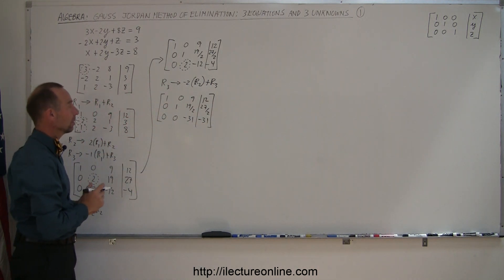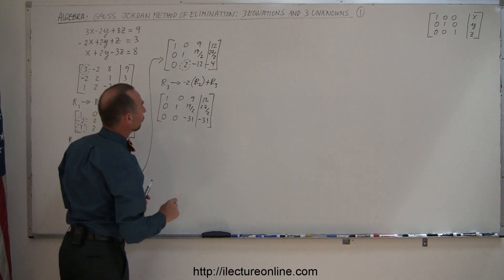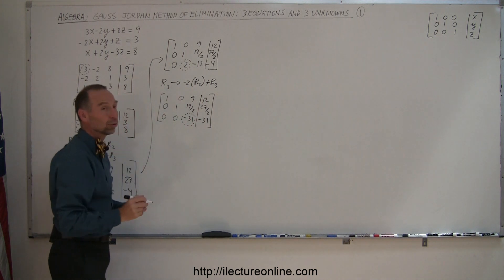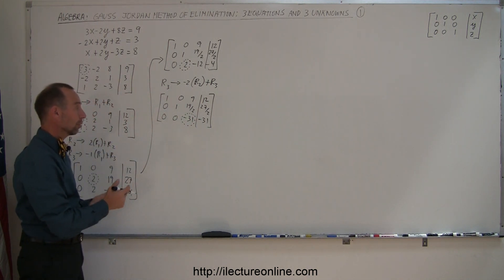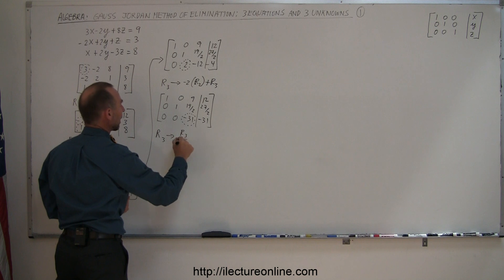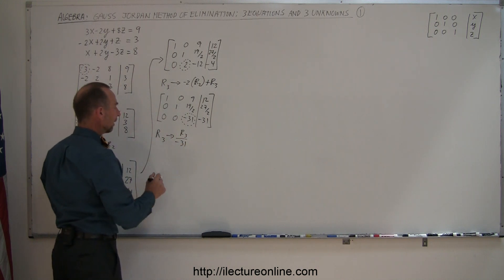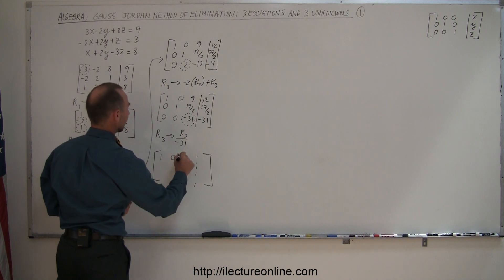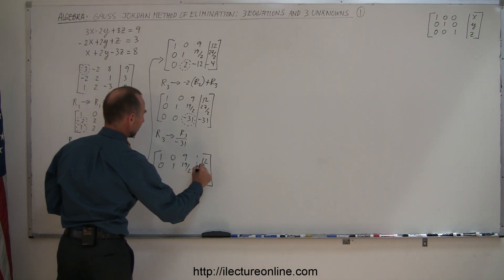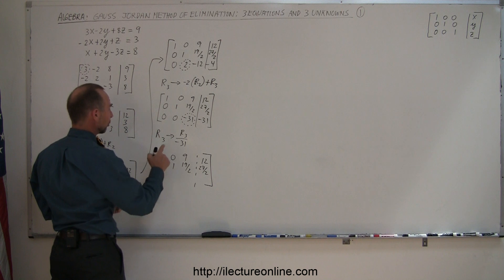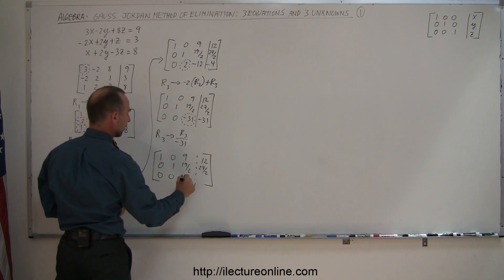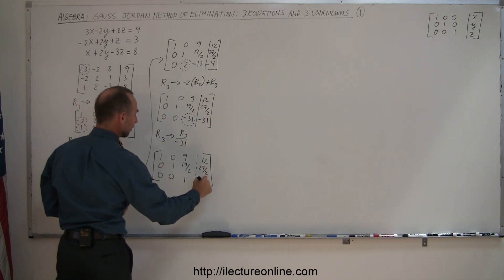I'm getting closer now — the first two columns look the way I want. Now going to the third column: I take the row three diagonal entry and turn it into a one by dividing row three by negative thirty-one. The other two rows stay the same: row one is one, zero, nine, twelve; row two is zero, one, nineteen over two, twenty-seven over two; and row three becomes zero, zero, one, one.